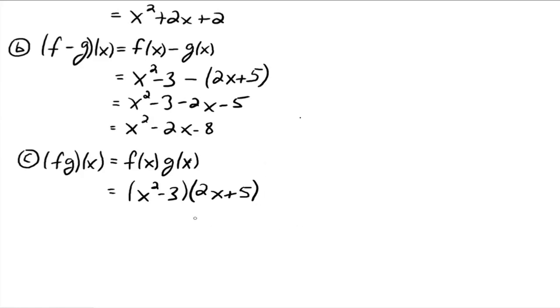And this is just multiplying two polynomials together. So you've done that before. So this goes to 2x cubed plus 5x squared, if you distribute that through, minus 6x minus 15. And this is your new function down here. And its name is f times g of x.